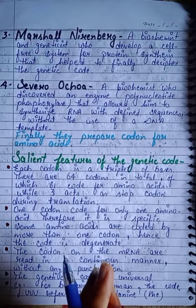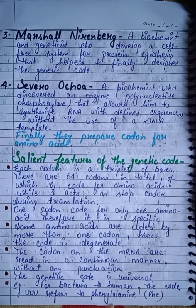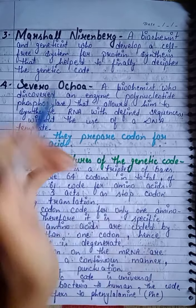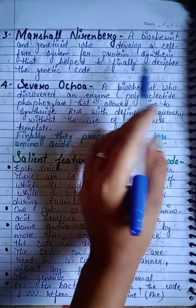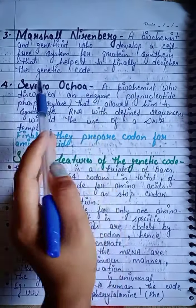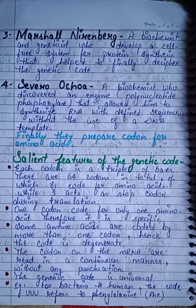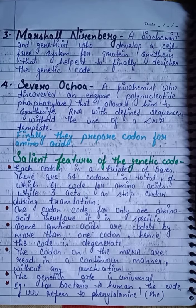The third was Marshall Nirenberg, a biochemist and geneticist who developed a cell-free system for protein synthesis that helped to finally decipher the genetic code.